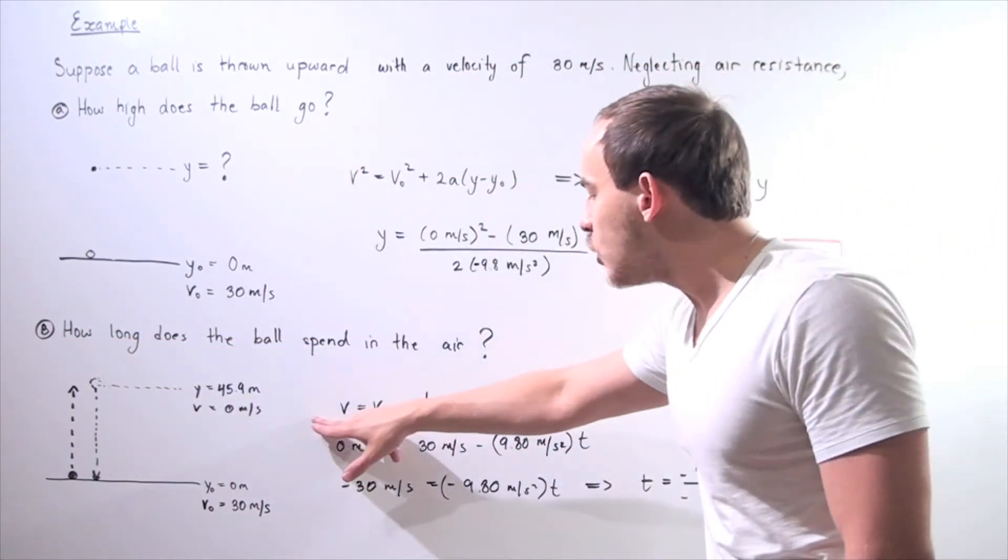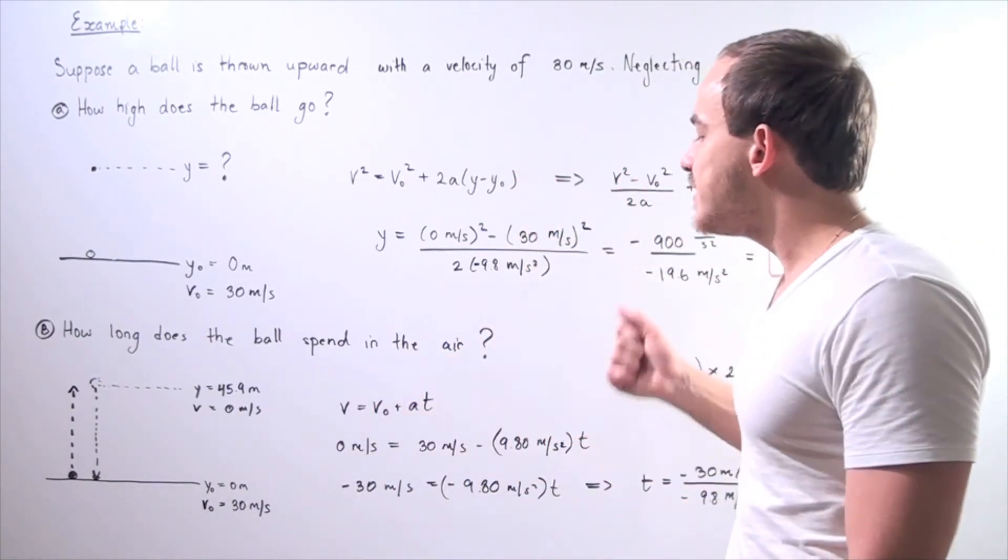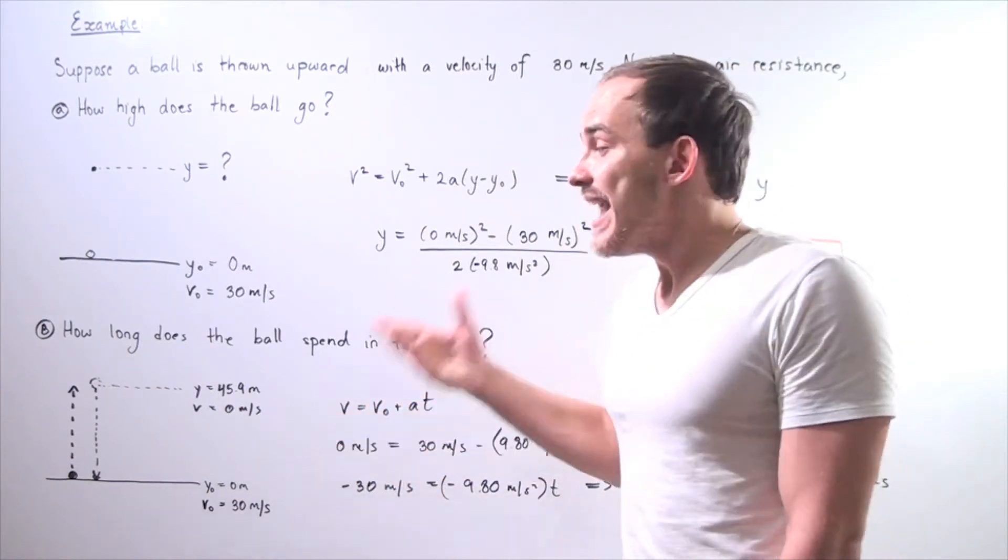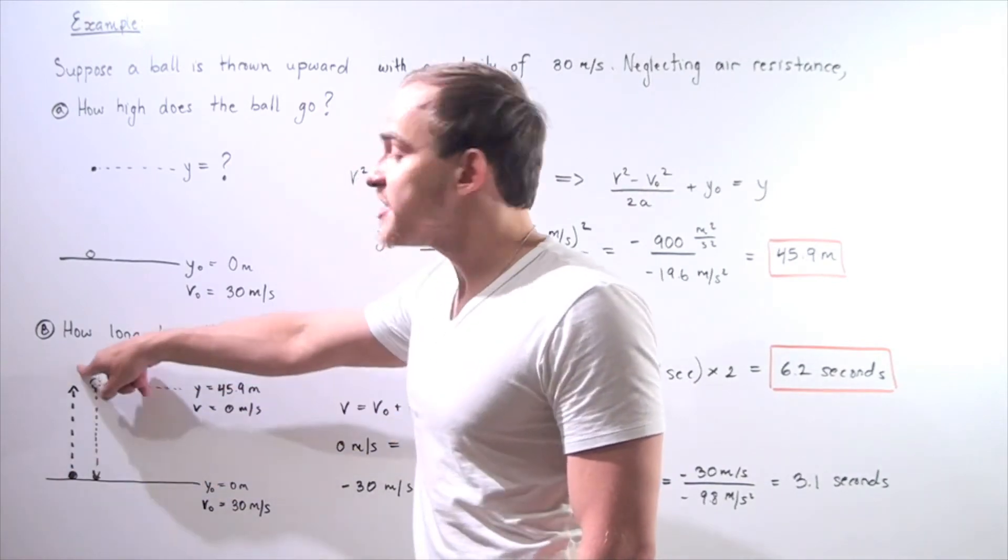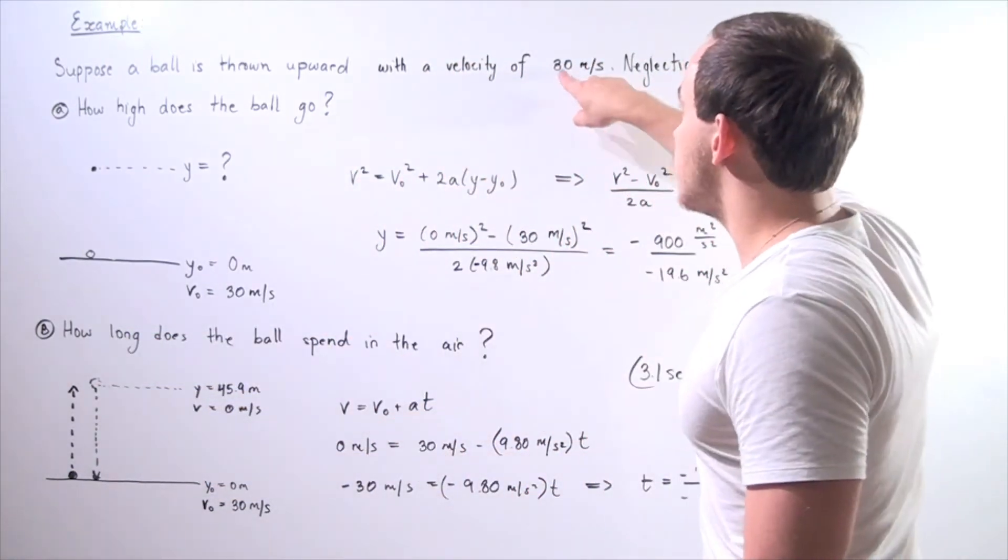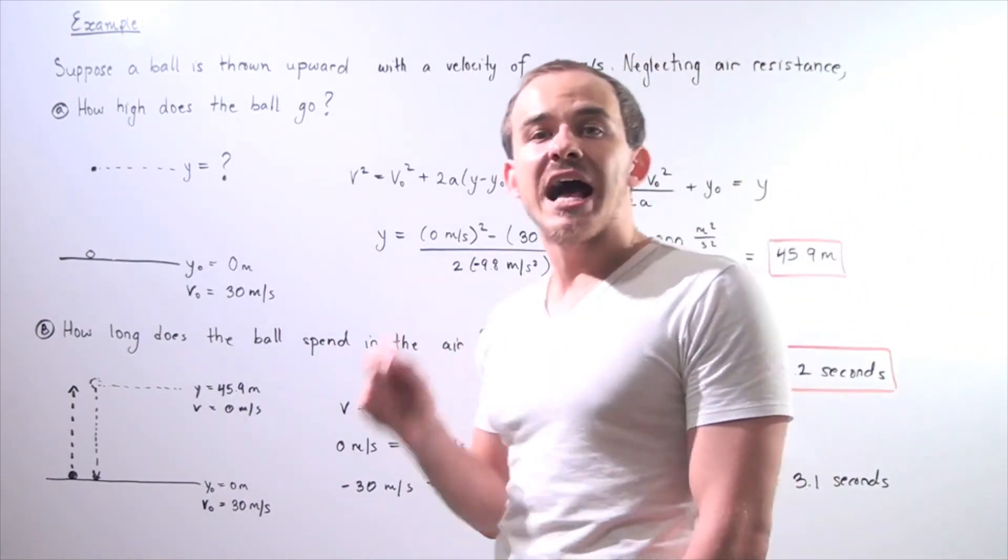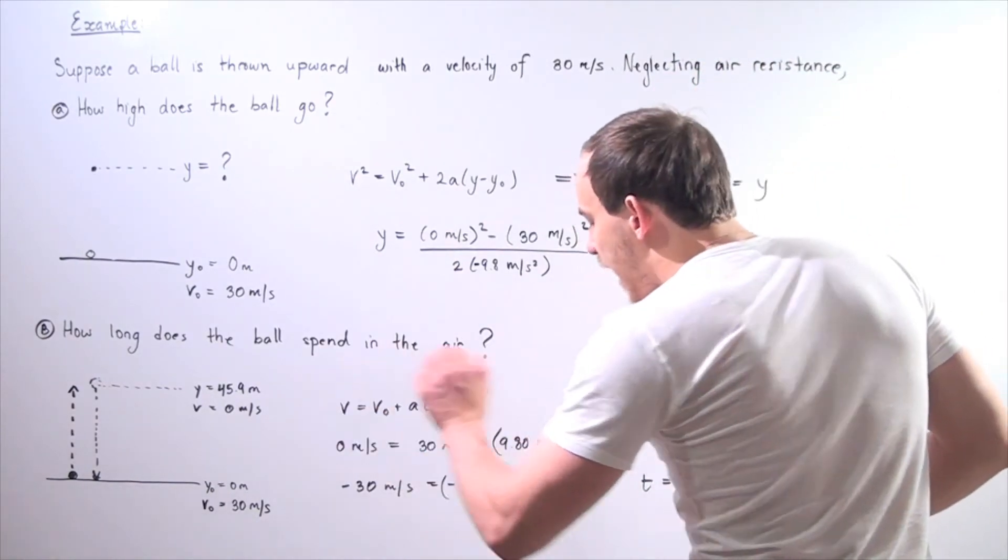So let's use the following equation. Why? Because we know all the variables beside our time. So we know what our v final is. It's 0 meters. In other words, when our ball reaches the highest point, its velocity is 0. Our v initial is given to be 30 meters per second, and our acceleration is negative 9.8 meters per second squared.